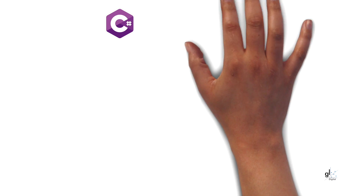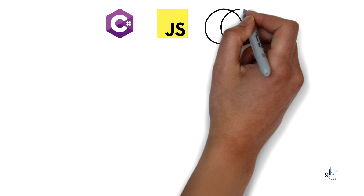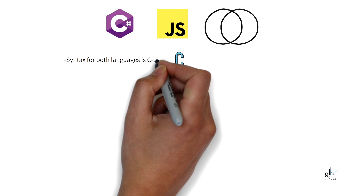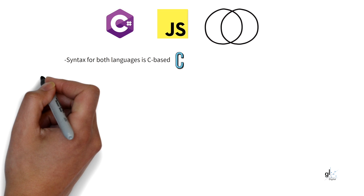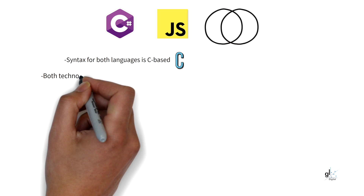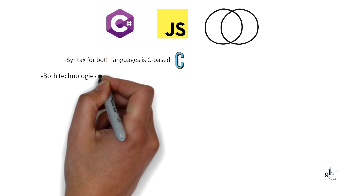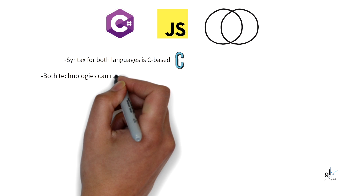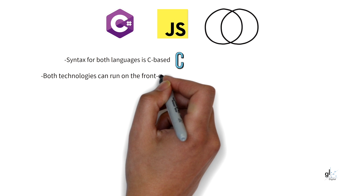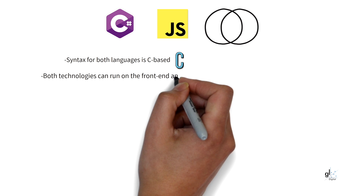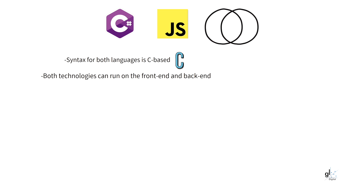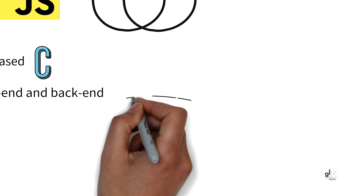Let's look at the similarities between C# and JavaScript. The syntax for both C# and JavaScript is C-based. In both C# and JavaScript, you can write full-stack web applications using one technology, so both can be used to create front-end and back-end functionality. In JavaScript, for example, you could write back-end code that runs in the Node.js runtime environment and use vanilla JavaScript or a sophisticated framework like React or Angular for the front-end user interactivity functionality that runs inside the web browser.